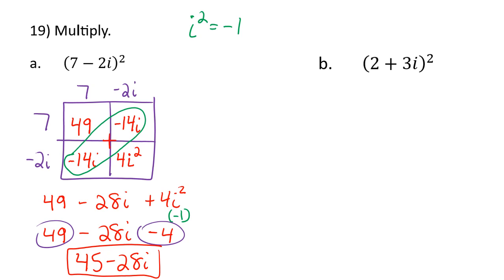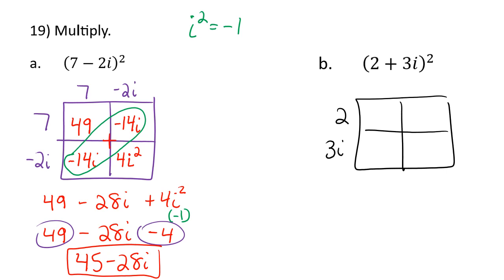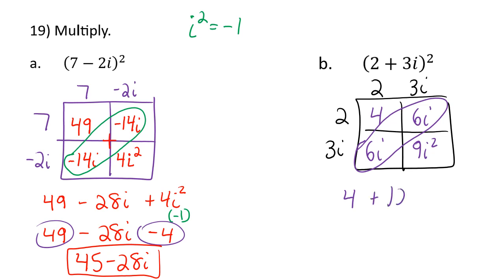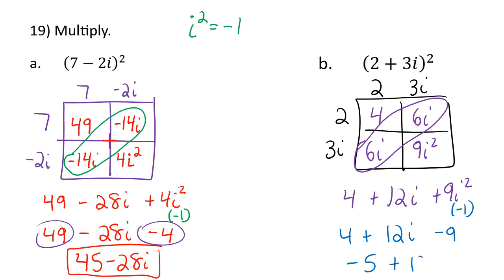For (2 plus 3i) squared, use the box again: 2 times 2 is 4; 2 times 3i is 6i; 2 times 3i is 6i; 3i times 3i is 9i-squared. Combining: 4 plus 12i plus 9i-squared. Since i-squared equals negative 1, 9i-squared is negative 9. So 4 minus 9 is negative 5, giving negative 5 plus 12i.